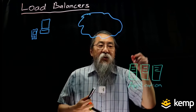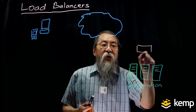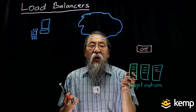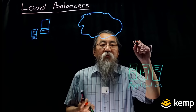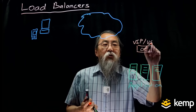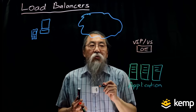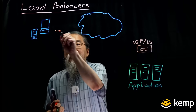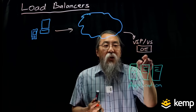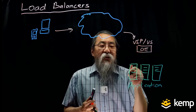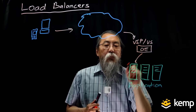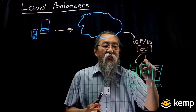What the load balancer does is sit in front of the application servers and act as a traffic cop. It hosts what we call a virtual IP address, or a virtual service or virtual server, and the clients connect to this virtual IP address. The load balancer then manages these connections and sends traffic coming in from a certain client to a specific application server.